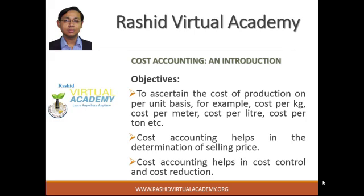The second objective is that cost accounting helps in the determination of selling price. As you know, selling price includes cost plus profit. So to determine the selling price, you first need to know the cost — how much you invested in making the goods you will sell. Cost accounting records, classifies, and summarizes every cost in production. So if you want to fix the selling price of any product, cost accounting helps you find the total cost, and then you add profit to fix the selling price for the customer in the market.